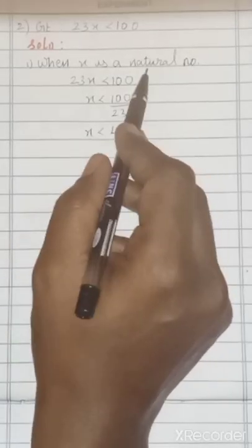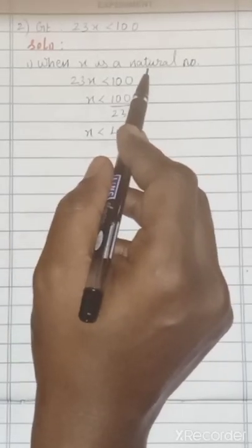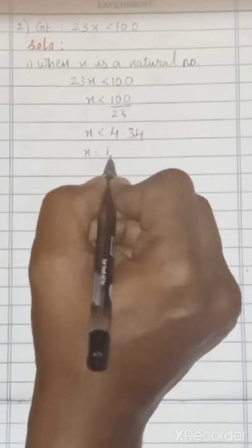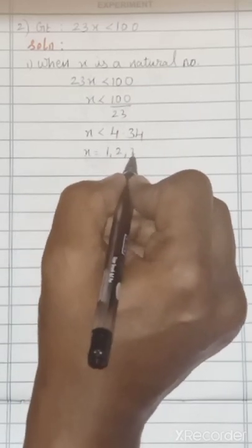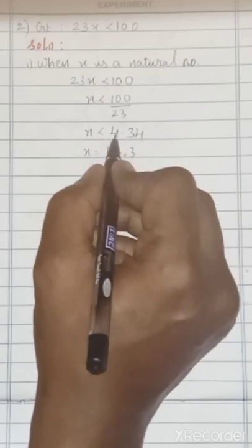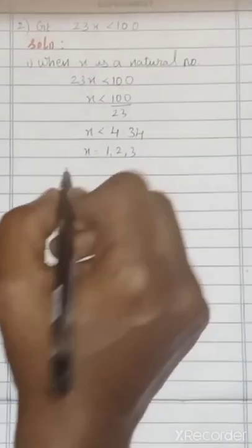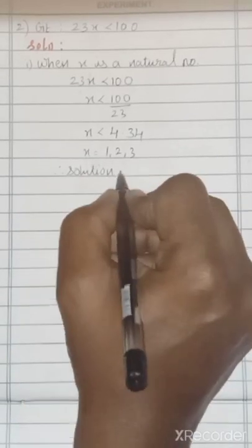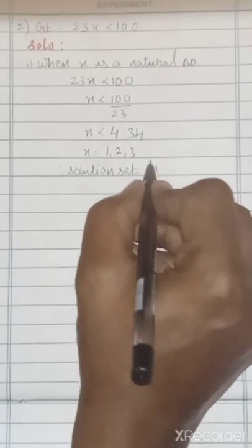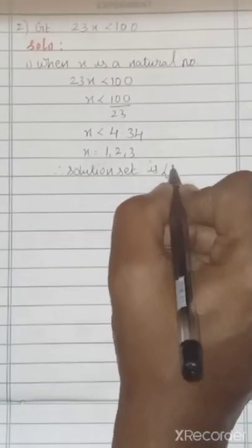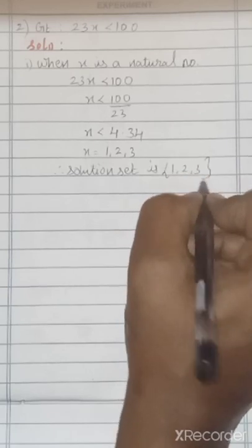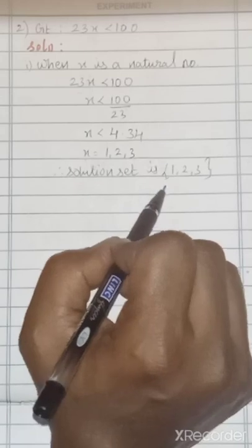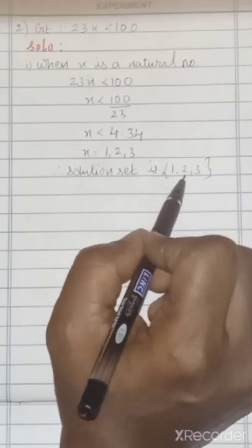When x is a natural number, the values are x = 1, 2, 3. We cannot take 4 because it is 4.34 only. Therefore, the solution set is {1, 2, 3}.